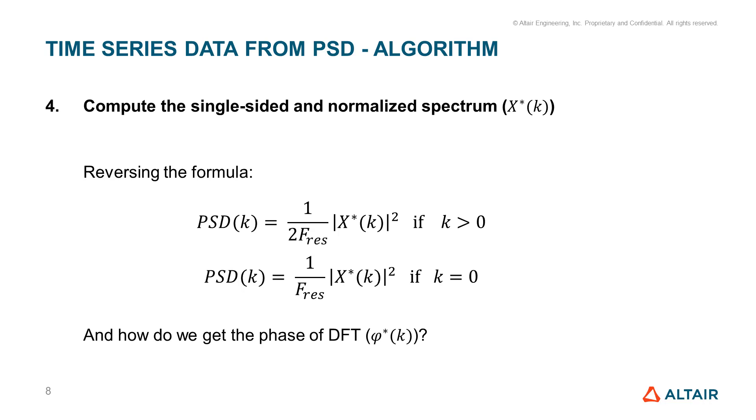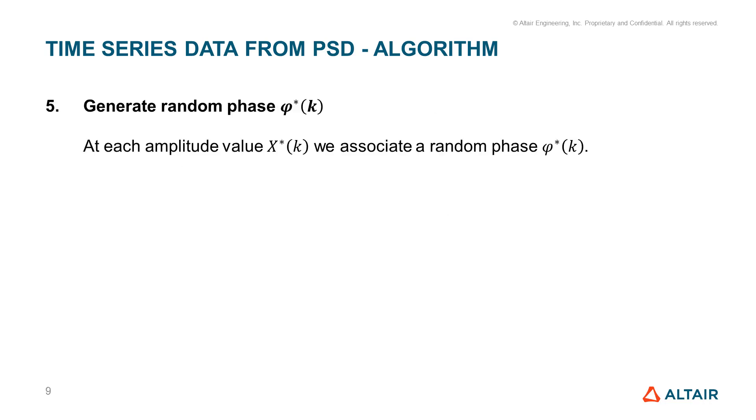And this leads us to the fifth step. We generate a random phase for each amplitude value of the discrete Fourier transform. And this is the reason why from the same PSD curve we can create infinite realizations of a time series.